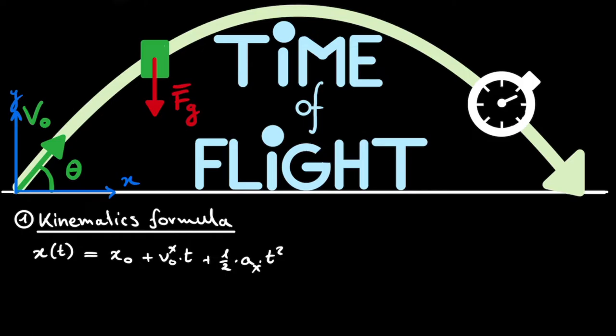And this equation can basically be copied for the y-direction. We have that the y after a specific time t is the initial height y0 plus the initial velocity in the y-direction multiplied by t plus one half multiplied by the acceleration in the y-direction multiplied by t squared.